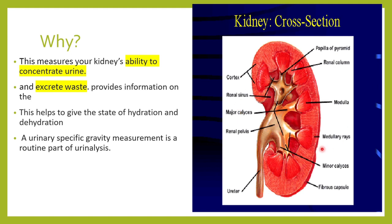Agar dehydration ho jata hai, toh kidney zyada se zyada water ko absorb karta hai. Agar over-hydrate ho jata hai, toh the urine becomes very dilute and the kidney will pass a lot of urine. That is the concentration capacity of the kidney, and to measure this we will require specific gravity, which is a routine part of urine examination.